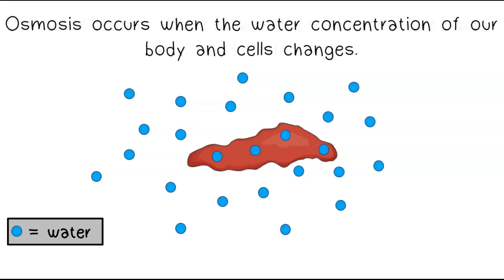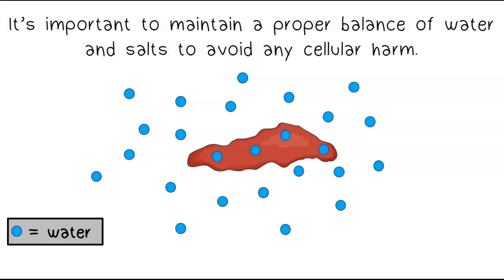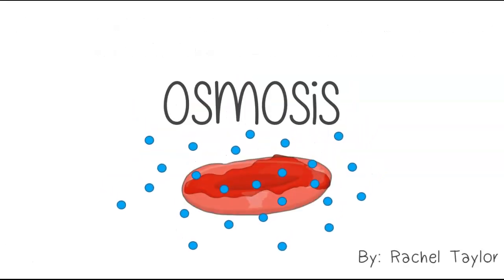Osmosis occurs when the water concentration of our body and cells changes. It is important to maintain a proper balance of water and salts to avoid any cellular harm.